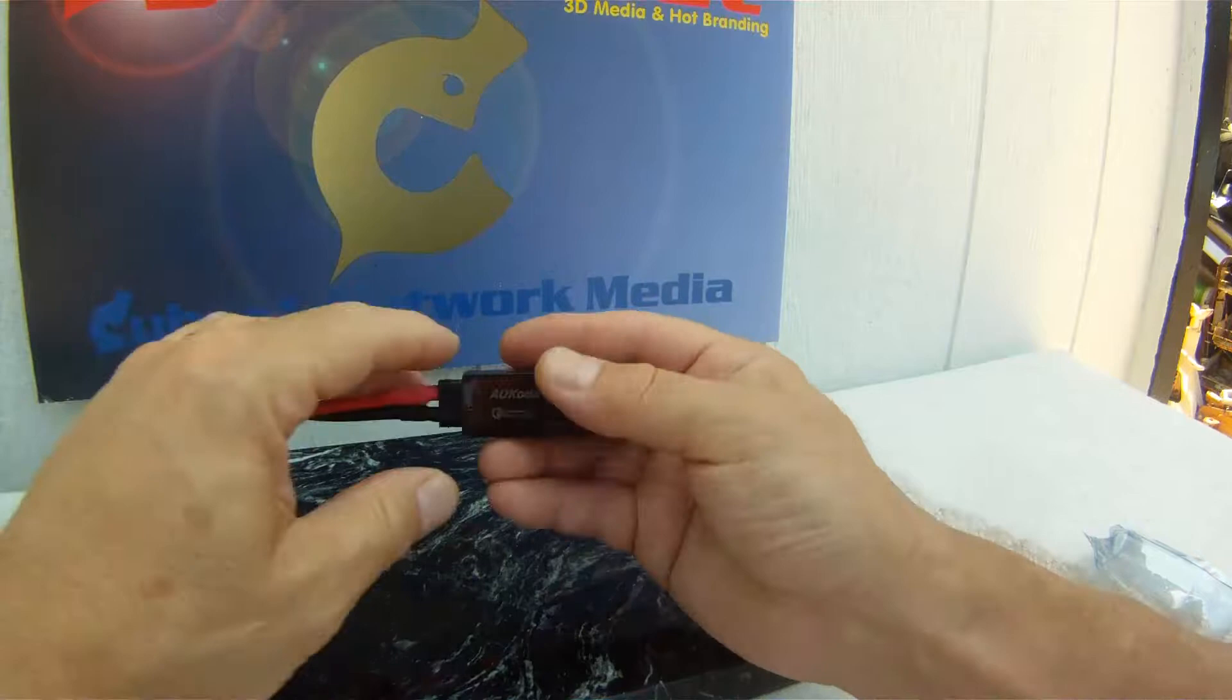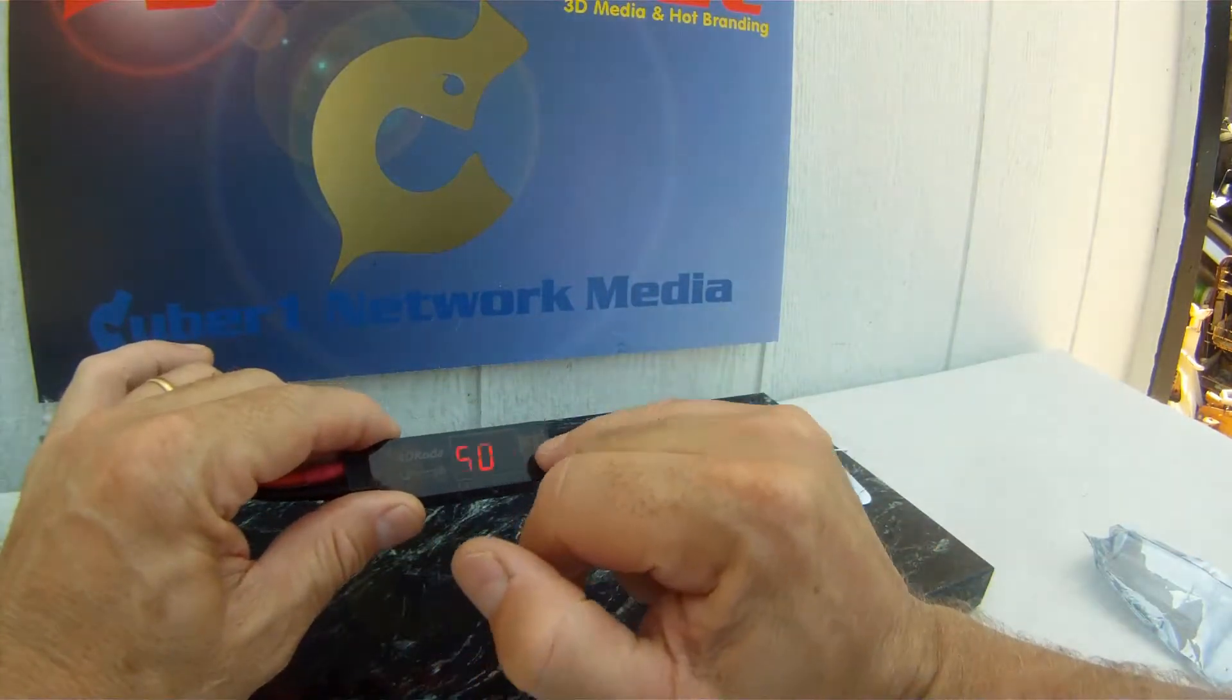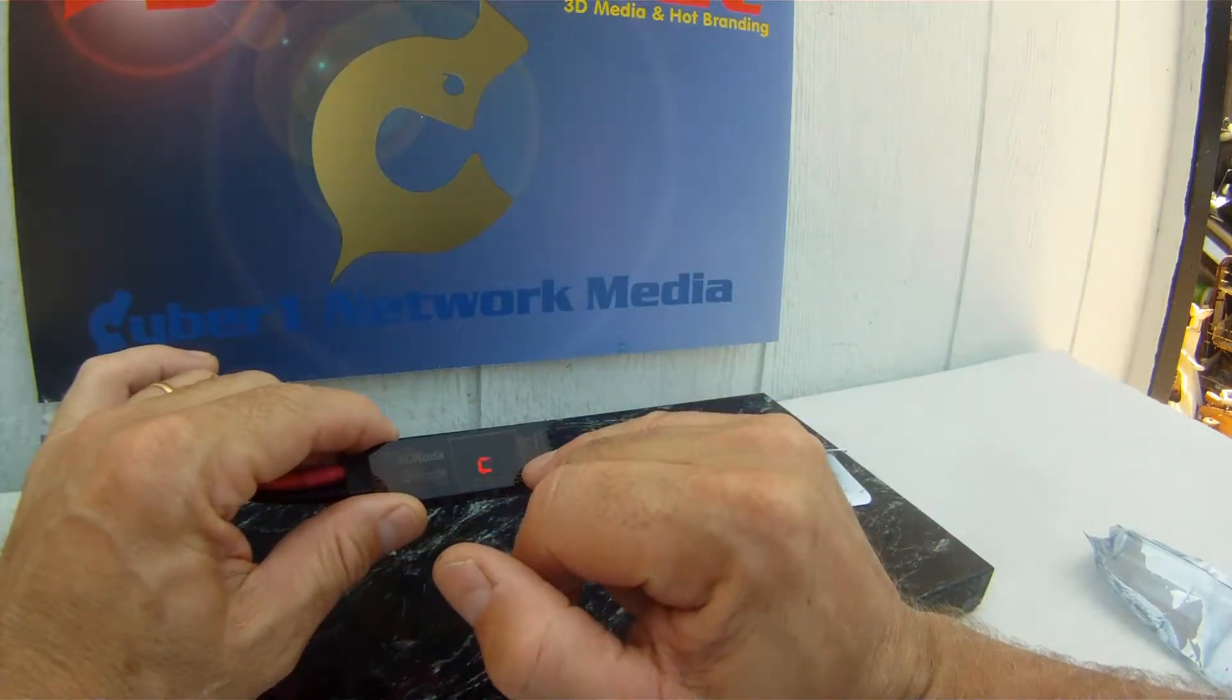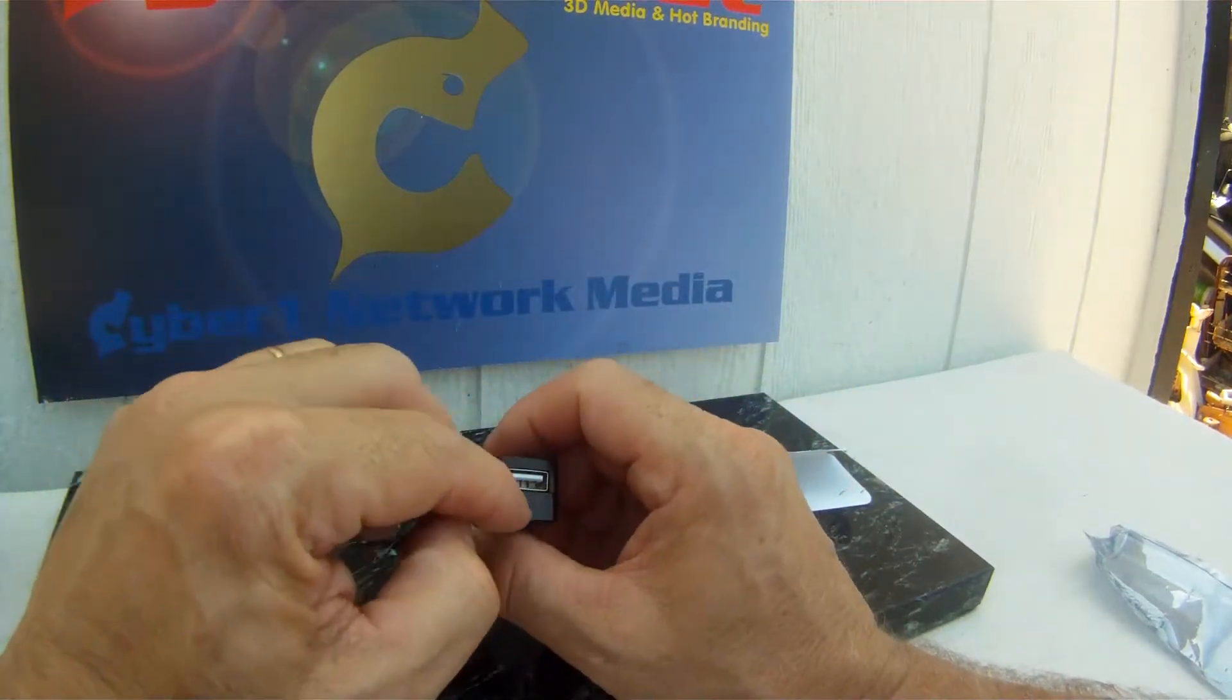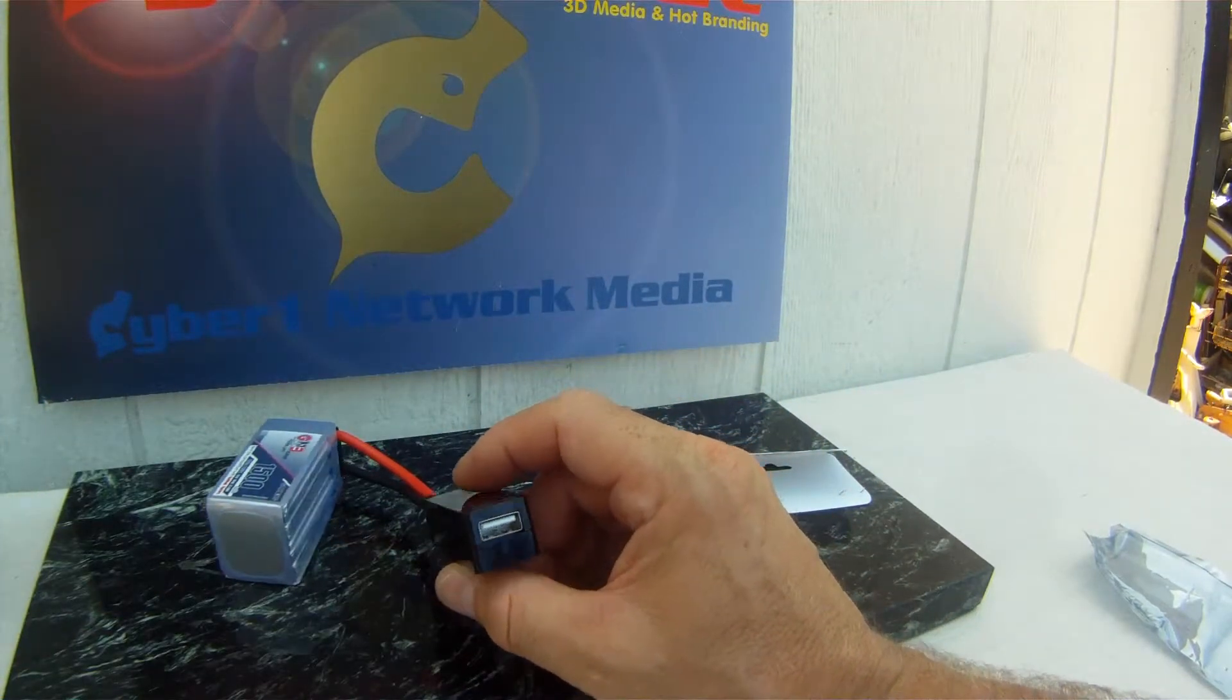When we plug it in, it recognizes that it's a 4 cell and it gives us the total voltage. And then we've got that as an output device for your power bank.